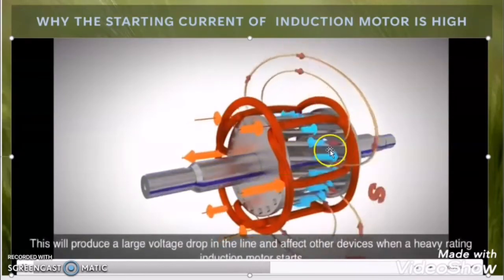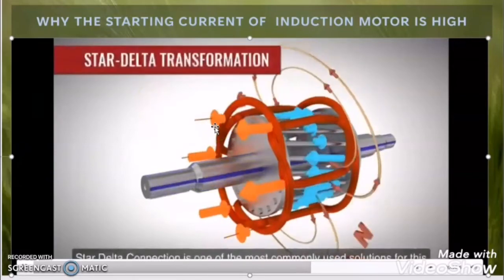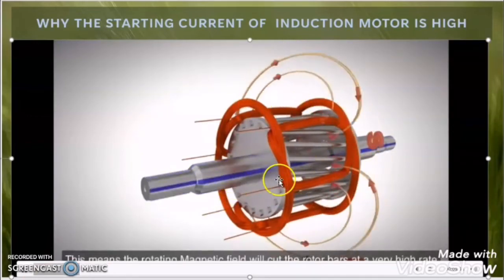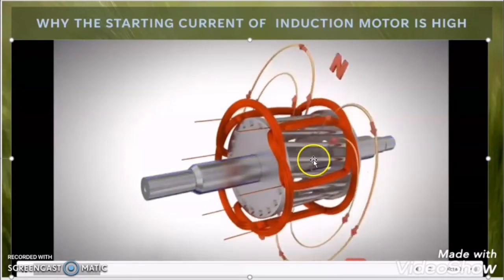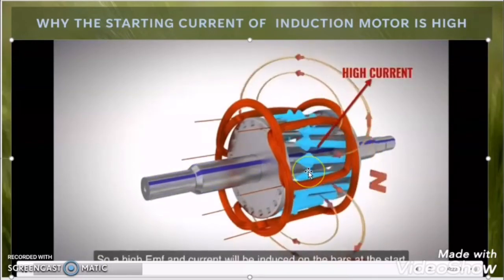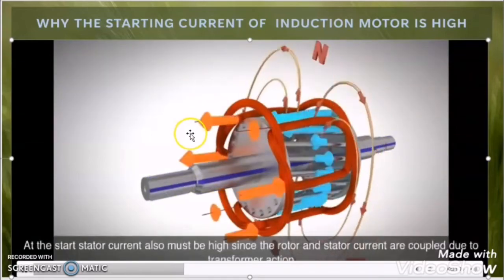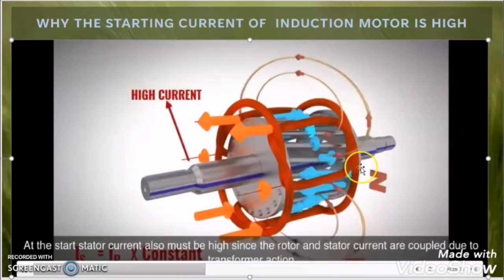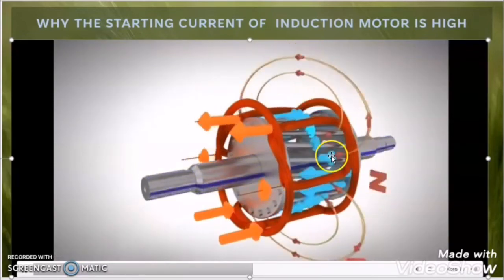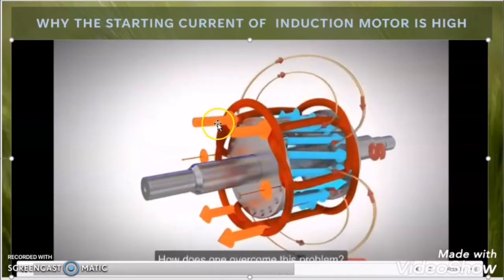But once the rotor starts rotating, the magnetic flux linkage with the rotor bar will become normal and there will be normal induced EMF and normal induced current in the rotor. So during running condition, the motor will only take rated current. We can conclude here that at the time of starting, the rotor is in the standstill position and the rotating magnetic field is cutting the rotor bar at maximum, so there is maximum induced EMF and induced current in the rotor bar. As the rotor and stator are coupled with transformer action, due to the high induced EMF at the time of starting, the stator winding also takes high inrush current. But once the rotor starts rotating, the flux linkage becomes normal, so the stator winding takes only the rated current during running.